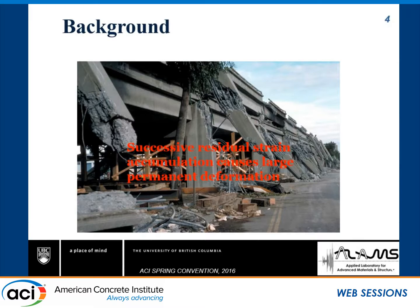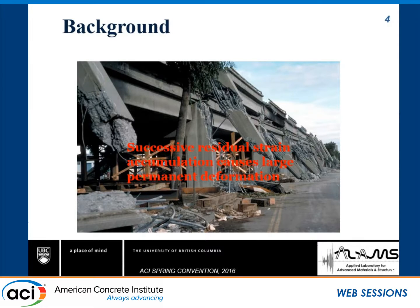Why do conventional structures experience permanent damage? When we use reinforced concrete structures, we use steel as reinforcement. When you have large seismic displacement demand, you have large residual plastic strain. After unloading, you will have large residual strain that accumulates over cycles, and that causes permanent displacement. But think about a material that can undergo large elastic deformation, and when the load is gone, it can recover most of its strain — then we can eliminate the permanent displacement that causes collapse.